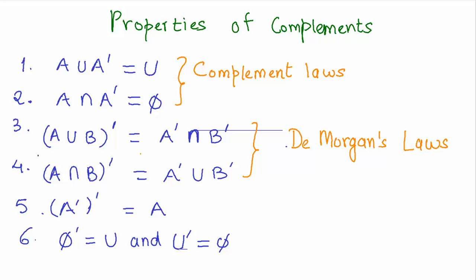There are two important laws called De Morgan's Laws, which are very helpful for set operations and problems we'll do later. The first law: the complement of A union B — on the left-hand side we combine two sets A union B forming a new set, and then take the complement of that new set. This is the same as the intersection of the complements of the individual sets.